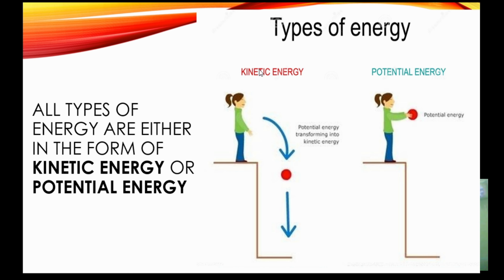All forms of energy can come under two types: kinetic energy or potential energy. Kinetic energy is the energy possessed by a moving object. When a moving car crashes into another car, all the energy possessed by the car because of its motion or speed is transferred to the other car it has crashed into. This is a transformation of kinetic energy.